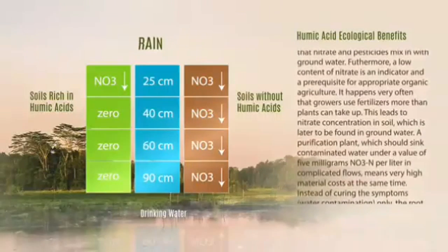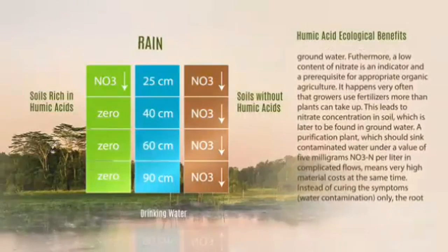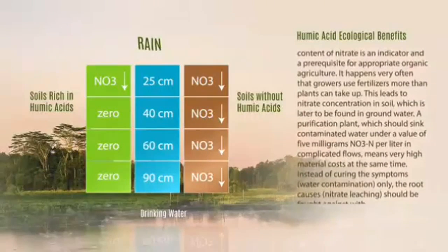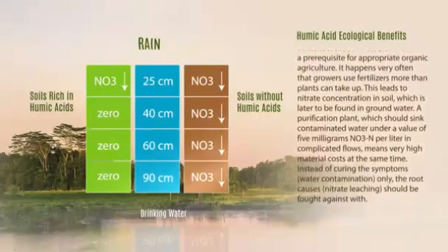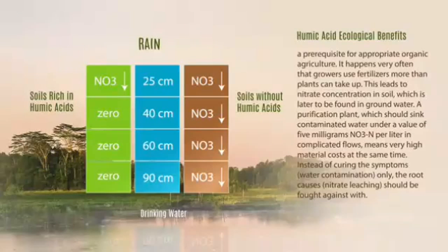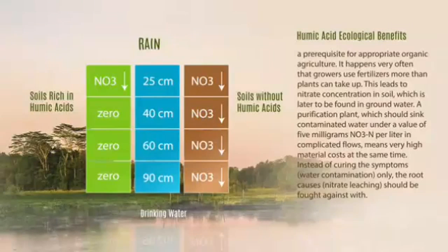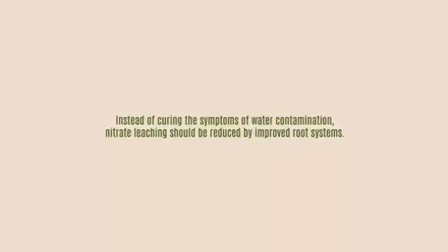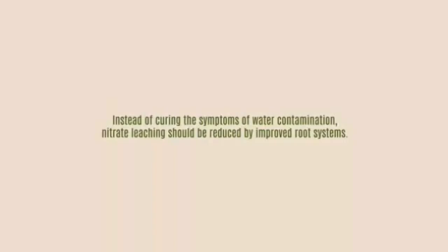It often happens that growers use fertilizers more than plants can take up. This leads to nitrate concentration in soil, which is later found in groundwater. A purification plant required to reduce contaminated water below 5 mg NO3-N per litre involves complicated flows and very high material costs. Instead of curing the symptom of water contamination only, the root cause — nitrate leaching — should be fought against.